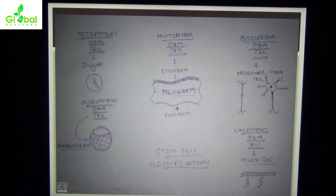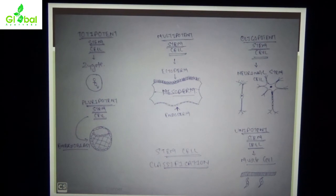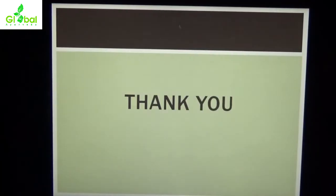Oligopotent stem cells include neuronal stem cells — specific to the neural system. Pluripotent stem cells include the embryoblast, from which maternal organs of the body are formed. This completes the classification of stem cells by potency.